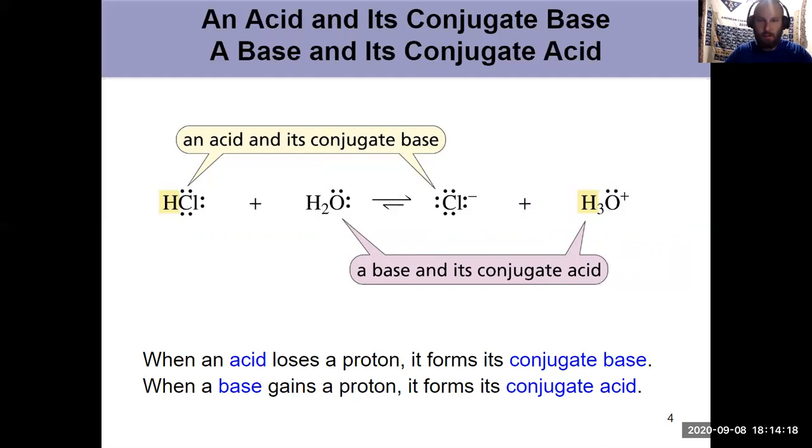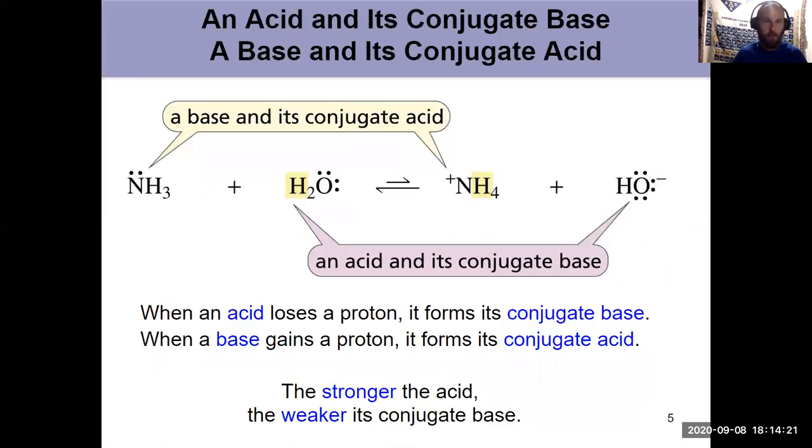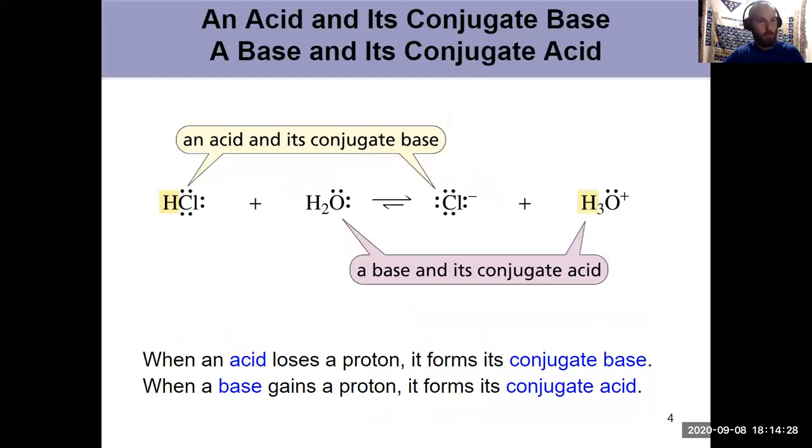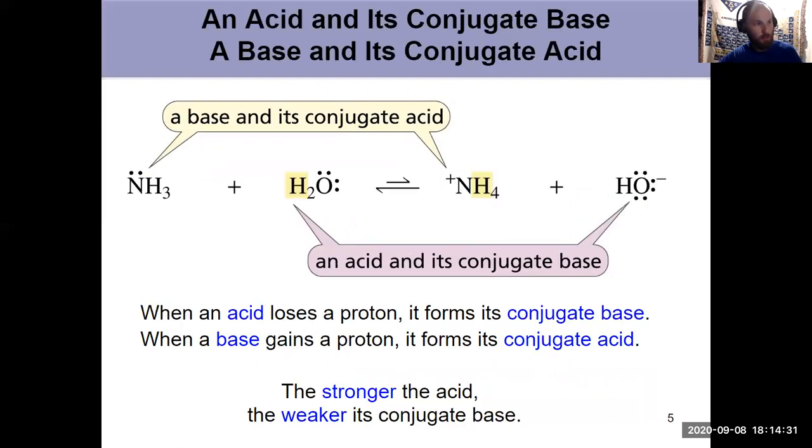Key idea: acid-base reaction in both directions, because we're going to start to examine them that way. Notice those different size arrows. The longer arrow is pointing toward which side is favored. Here, with the longer arrow on the bottom, that means our reactants are favored. They're going to predominate in solution. Also notice that we've seen water acting as both an acid and a base in these past two slides.